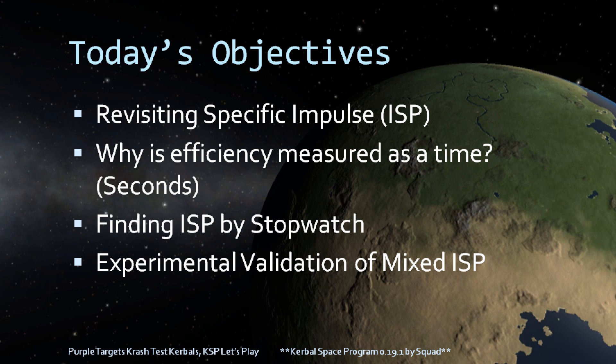For today's objectives we're going to revisit the specific impulse, or ISP, and what it really means in terms of efficiency. In the previous episode we discussed the formula for finding an overall ISP for when you have several engines with different ISP numbers, so we're going to find out how we can determine this average value experimentally using a stopwatch. And while we're at it, we're going to validate our mixed ISP equation as well.